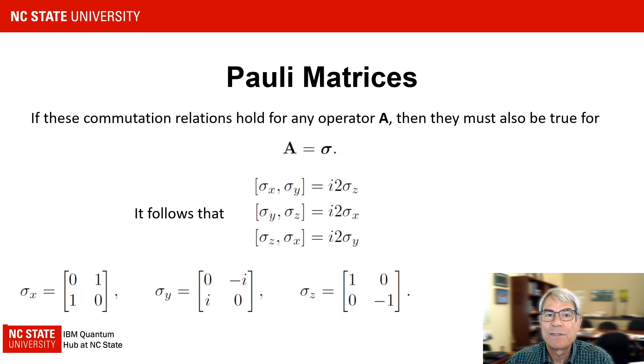Rotations about the x and y axes lead to additional commutation relations as shown here. Since these commutation relations were obtained without restrictions on the vector operator A, they must also be satisfied if we let A equal sigma. This leads to the commutation relations for the components of sigma as shown here. We conclude that for our trial operator to properly rotate a quantum state vector, the components of the vector operator sigma must satisfy these commutation relations.